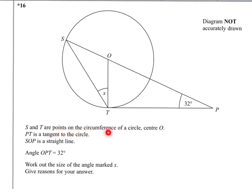S and T are points on the circumference of a circle at centre O. PT is a tangent to the circle. We know that the angle OPT, this one down here, is 32 degrees. Our task is to work out angle X.